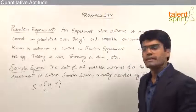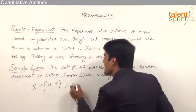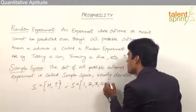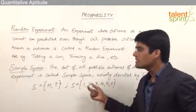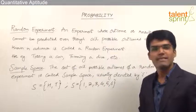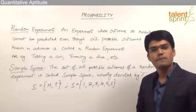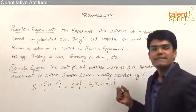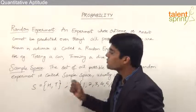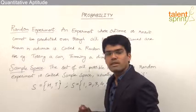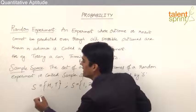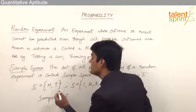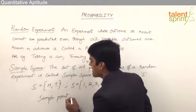Likewise, when we throw a dice the sample space can be taken as all those possible outcomes: 1, 2, 3, 4, 5, and 6. So these are the six possible outcomes when we throw a dice, and this is the sample space for throwing a dice. In this sample space each of these outcomes is known as a sample point. The set of all these sample points is known as sample space.